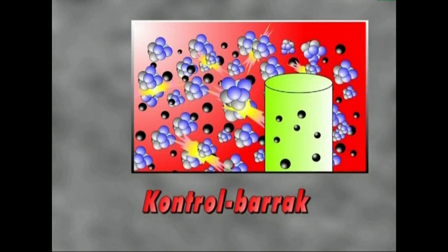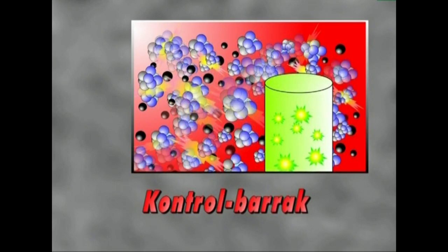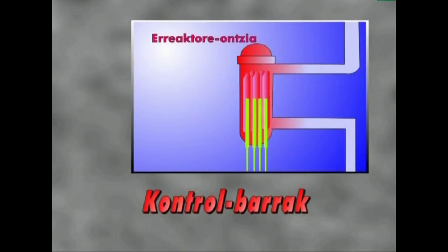Neutroiak ondo surgatzen dituzten materialez eginak dira. Normalean, borozkoak edo kadmiozkoak. Erreaktorearen gunean sartzeko eta ateratzeko mekanismoen bidez, erreakzioa bizkortu, moteldu, edo erabat gelditzeko aukera ematen dute.